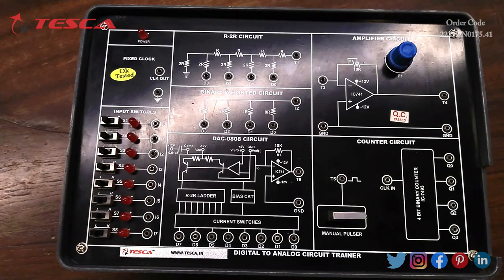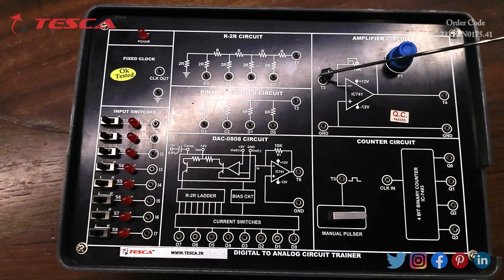Amplifier circuit is the next block. This section consists of op amp 741 and a potentiometer of 10K connected in feedback. The input to the amplifier is to be provided at T3 and output is obtained at T4.